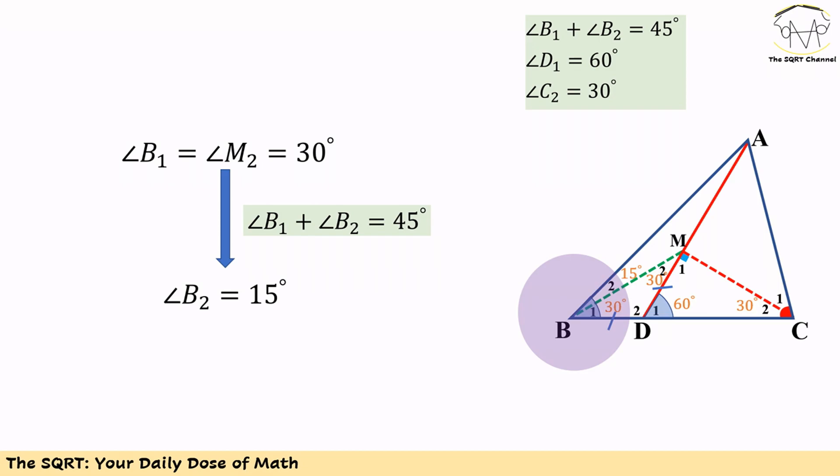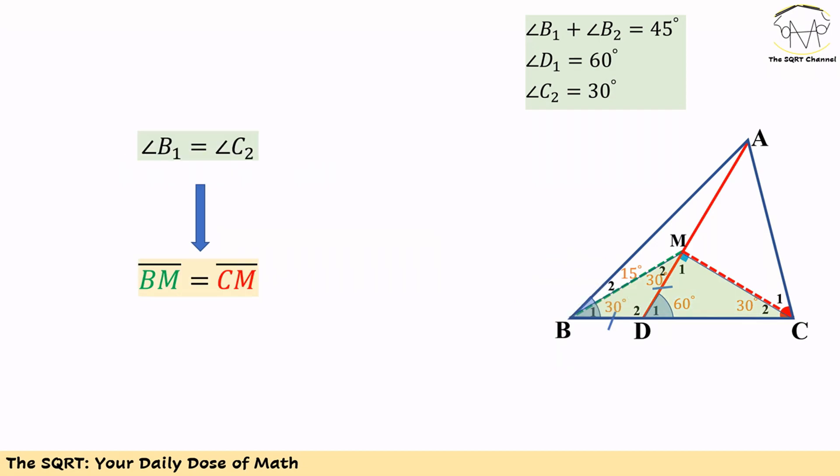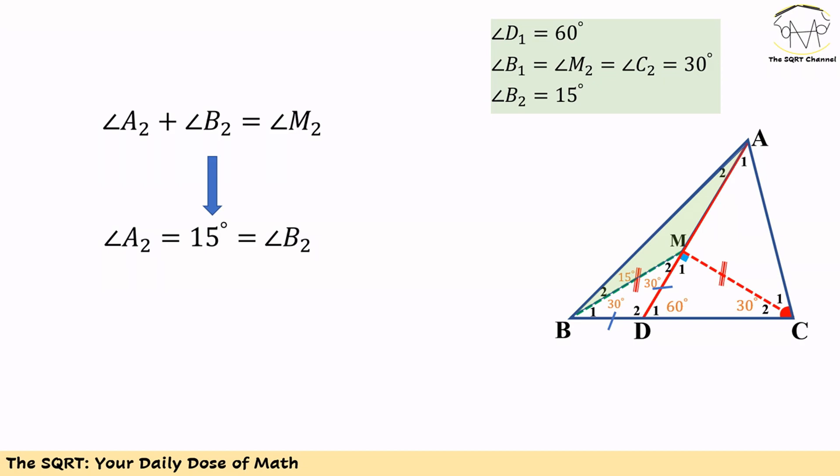Now in triangle BMC, we know both angles B1 and C2 are 30 degrees, so we can see that CM is equal to BM. Now in triangle AMB, we know B2 equals 15 degrees.